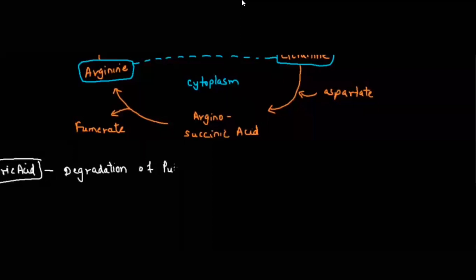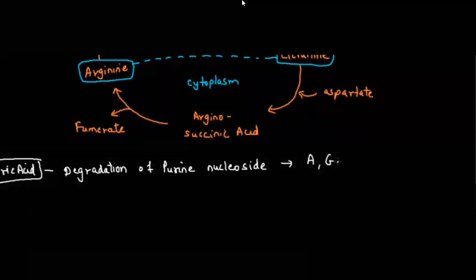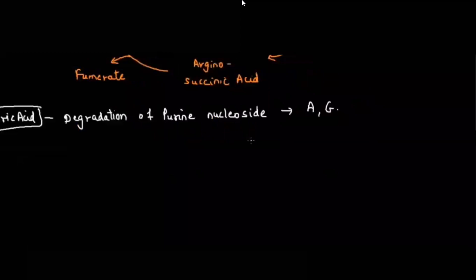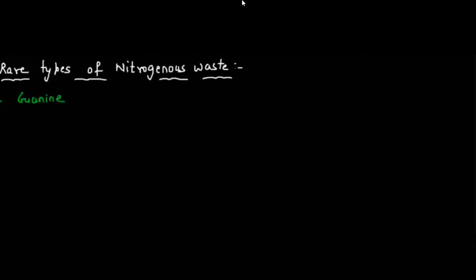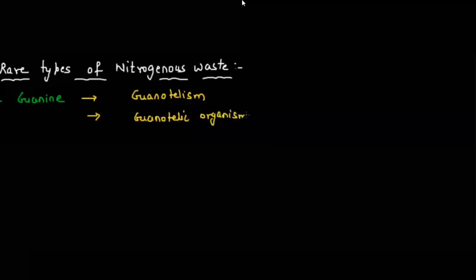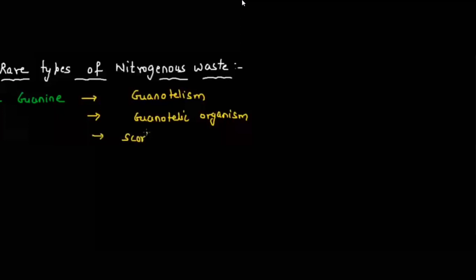Uric acid is produced by the degradation of purines like adenine and guanine — it is the nucleoside that is degraded, not the nucleotide. Rare types of nitrogenous waste are released by only certain groups of animals. Guanine is one such rare waste; the process of excreting nitrogenous waste in the form of guanine is called guanotelism. Animals like scorpion, spider, and penguin are considered guanotelic organisms.